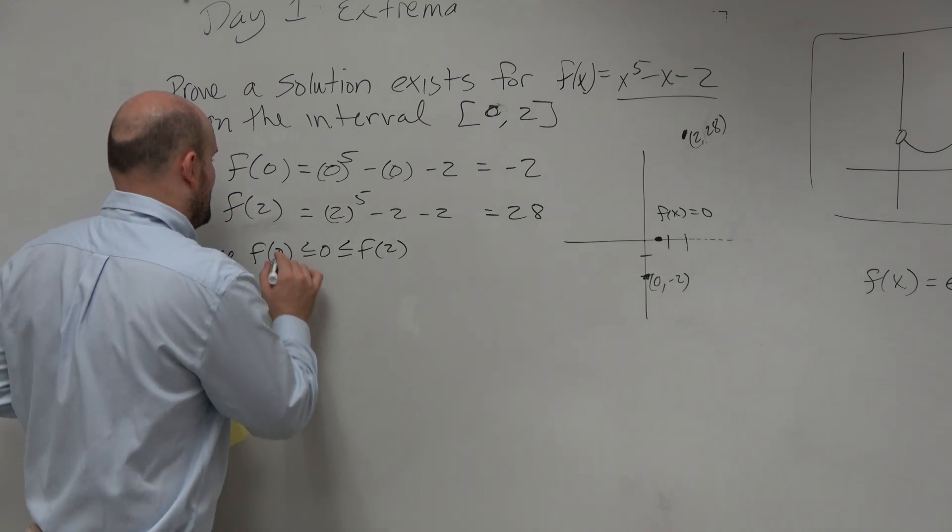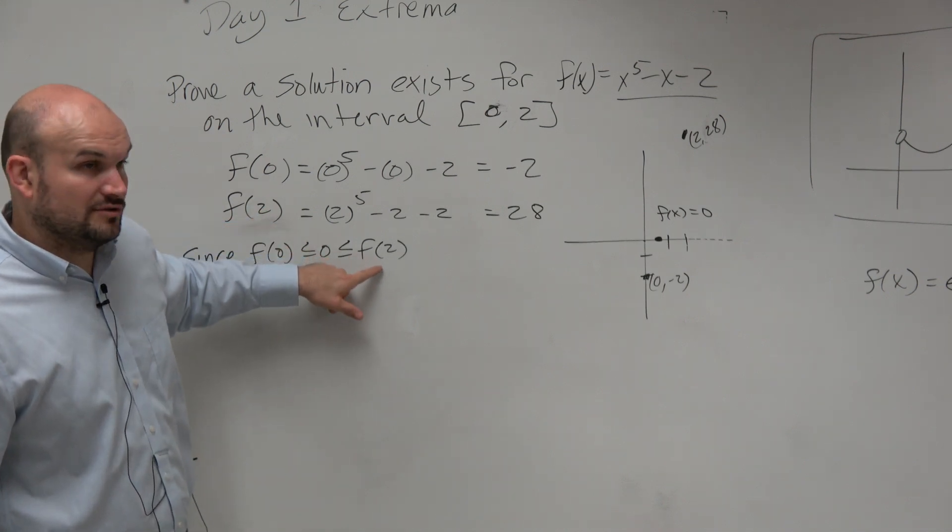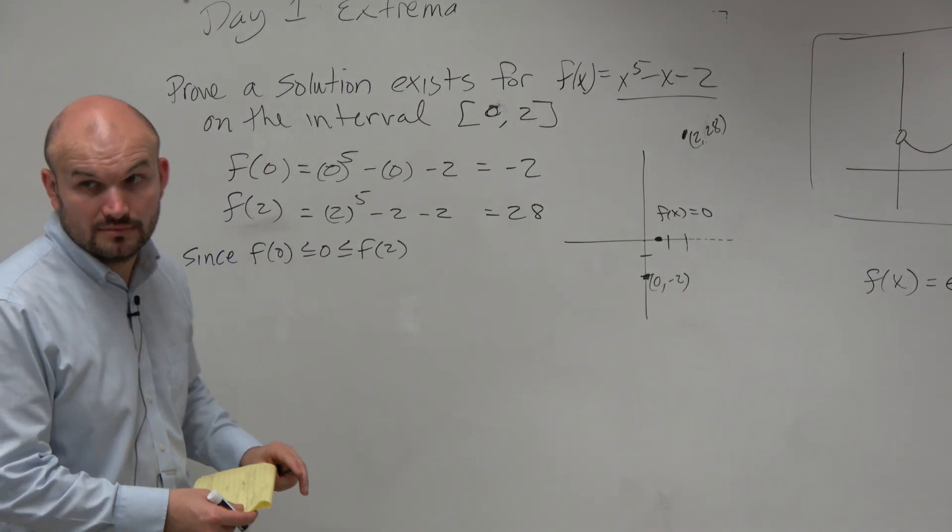f of 0 is equal to negative 2. f of 2 is equal to positive 28. 0 is in between. Agreed?